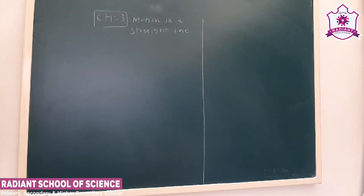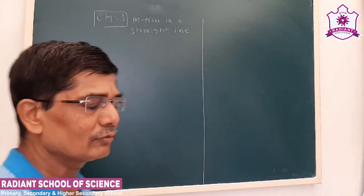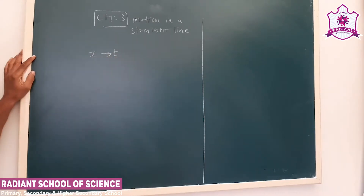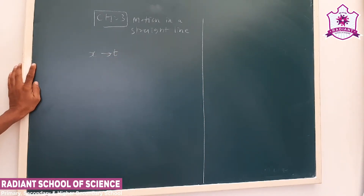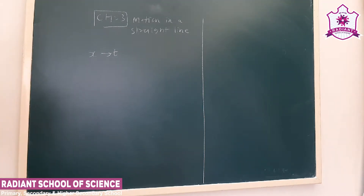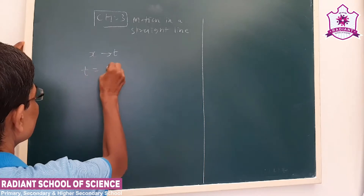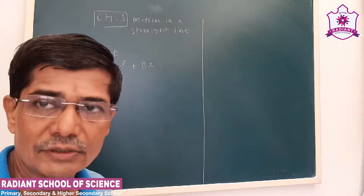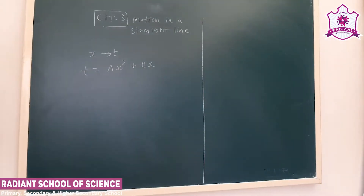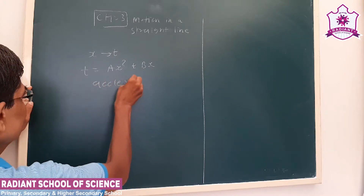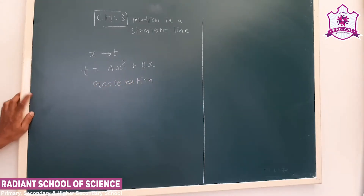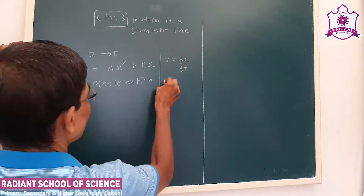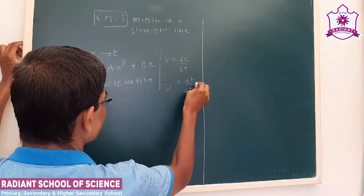Now let's take an interesting example. Generally we have an x versus t relation, but now we take a sum in which there is a t versus x relation. Let us say it is given as t = ax² + bx. This was asked in one of the competitive exams. We have to find acceleration. We know v = dx/dt, so 1/v = dt/dx, and this will be useful to us.